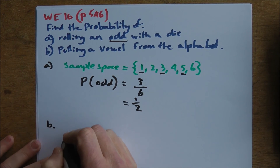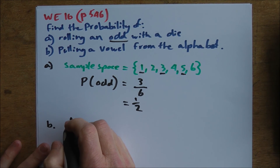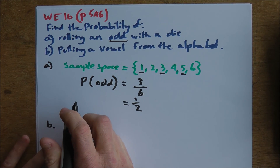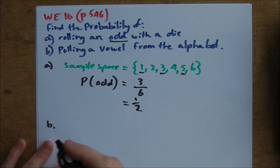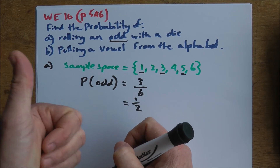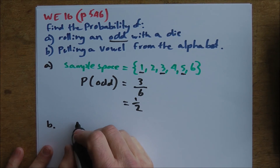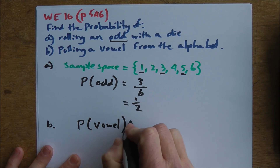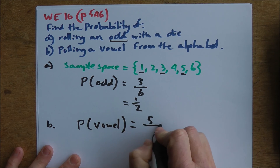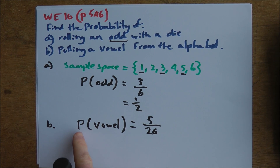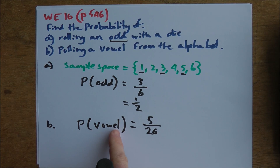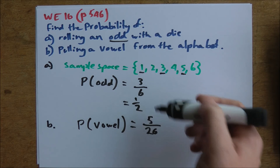For part B, the probability of selecting a vowel equals the number of favourable outcomes — there are 5 vowels — divided by the total number of letters in the alphabet, which is 26. So the answer is 5 over 26. That can't be simplified, so that's our final answer. We write out P(vowel) equals our fraction, and simplify if we can, just as we did in part A.